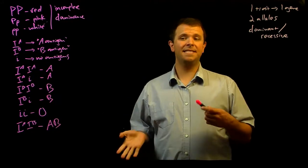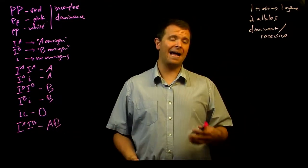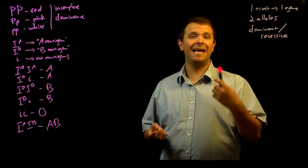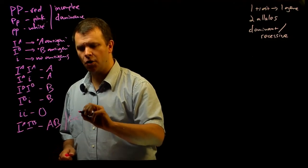And so this situation where both alleles have a phenotype result that's expressed in the heterozygote, we call this situation co-dominance.